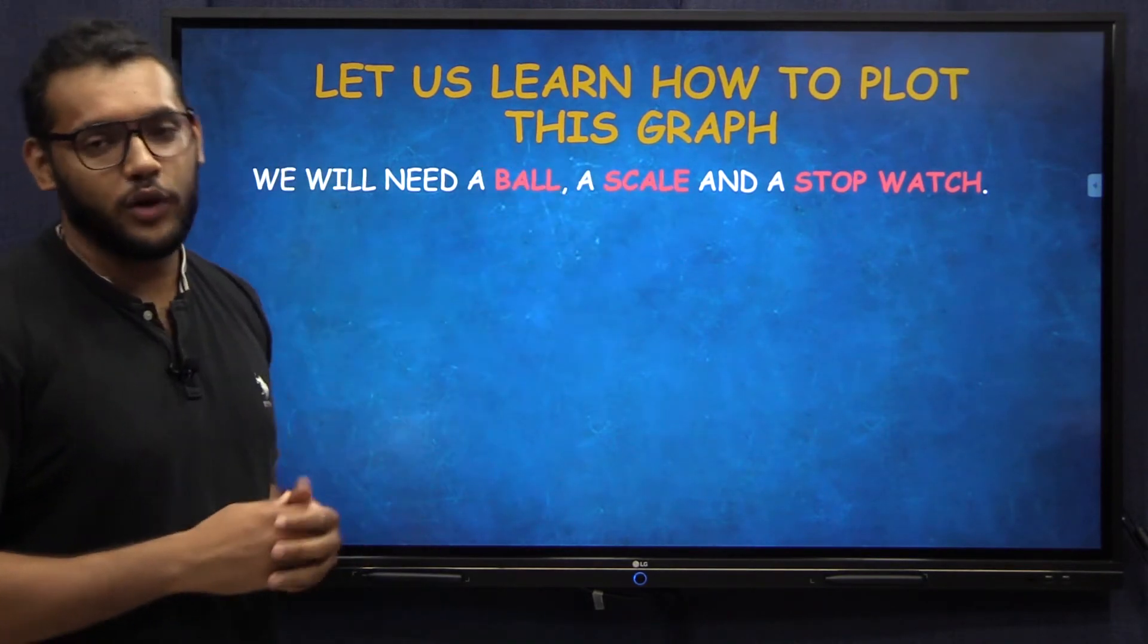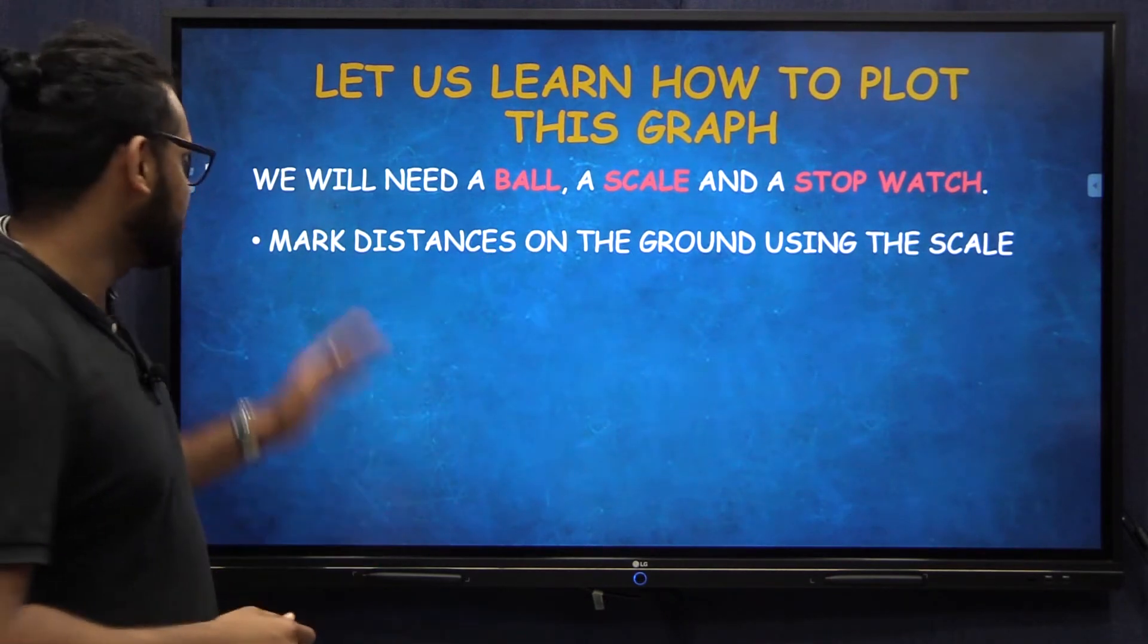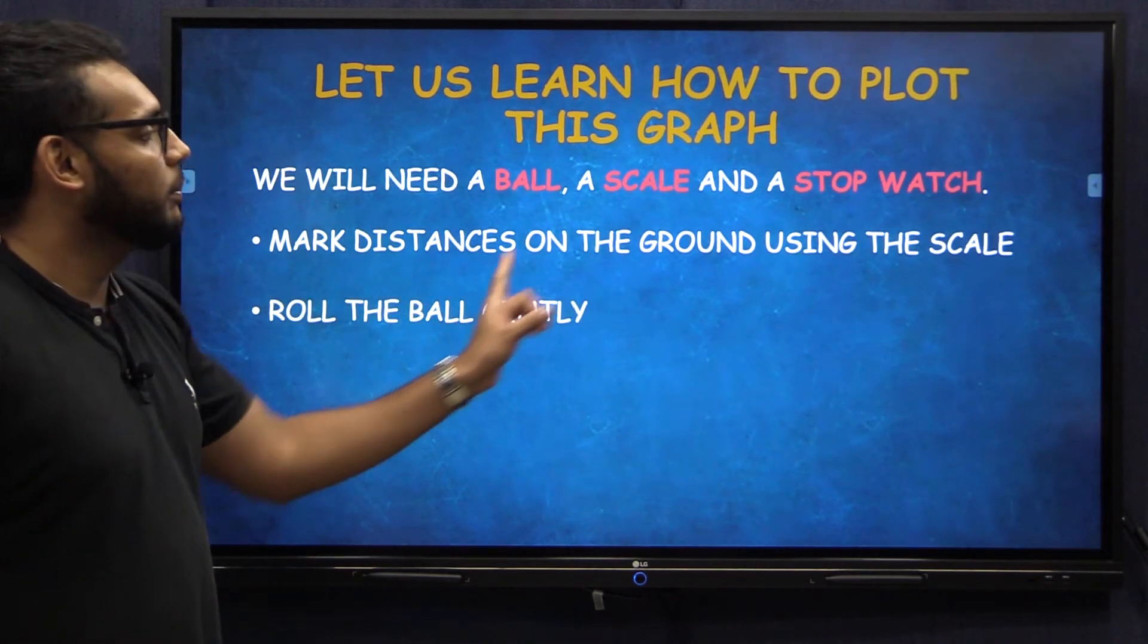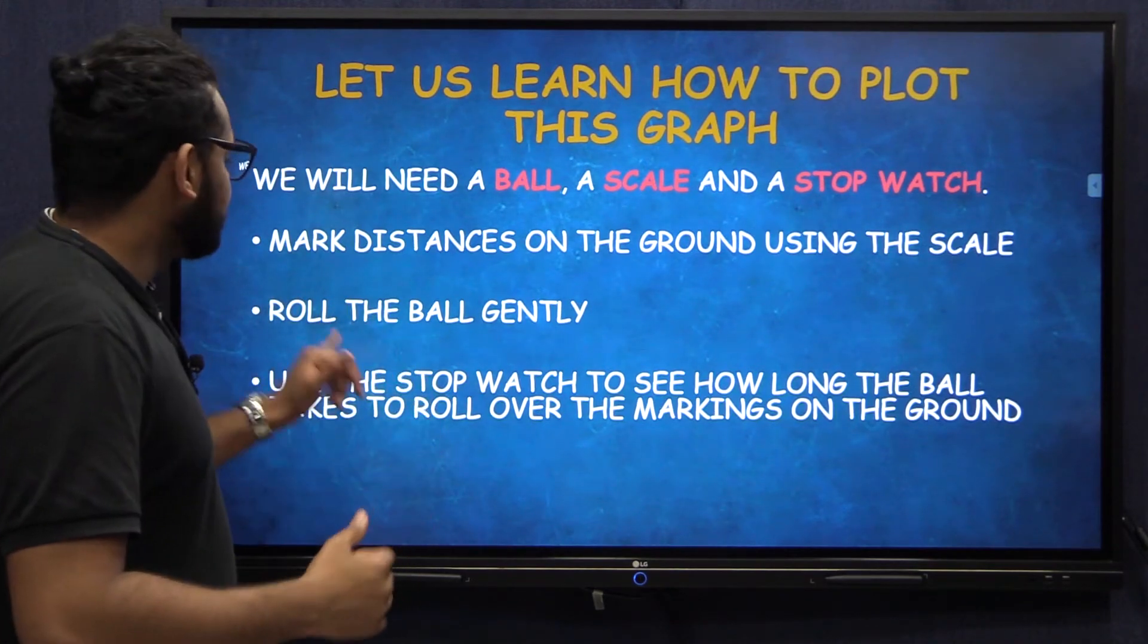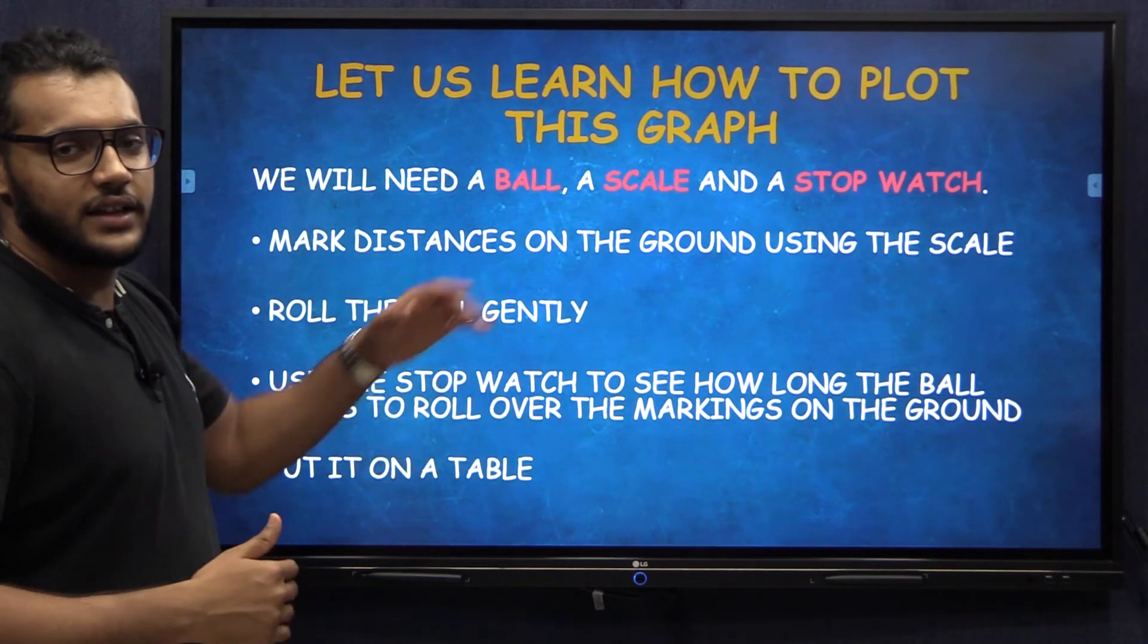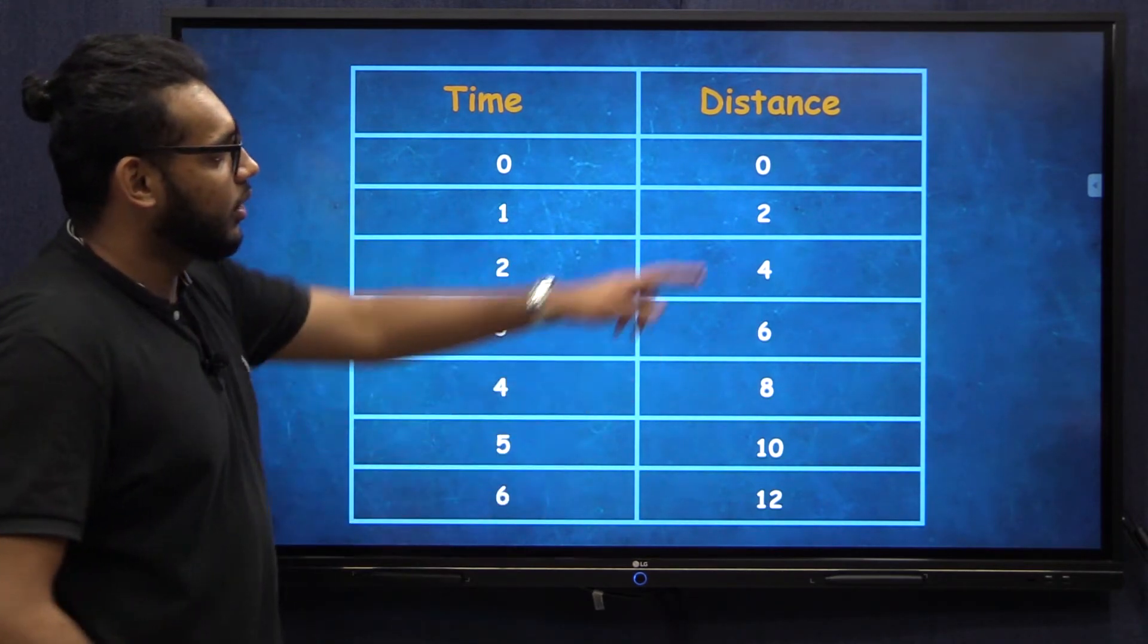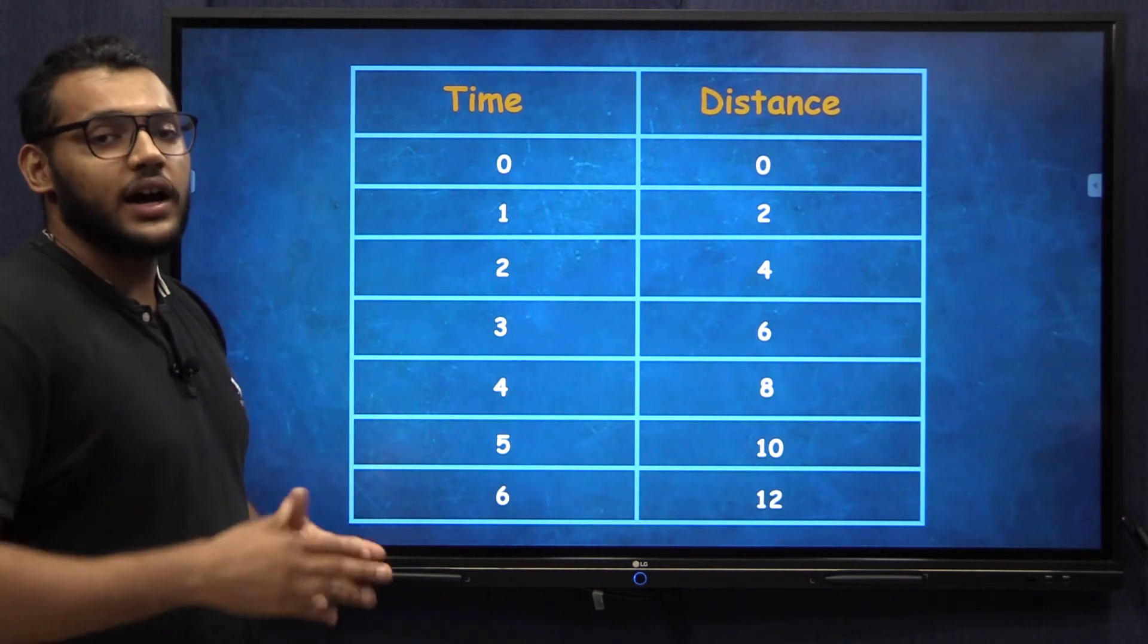Now let us learn how to plot this distance time graph. For that we do a small activity. We need a ball, a scale and a stopwatch. First, I want you to take the scale and make markings on the ground. That is 2 meters, 4 meters, 6 meters, 8 meters, 10 meters and 12 meters. Now that you've got this marking on the ground, I want you to roll the ball very gently and watch it roll past these markings. Now as the ball rolls past the markings, I want you to take the stopwatch and see how long the ball takes to go between each of the markings. Then I want you to record these on a table. You can do this multiple times to get the numbers correctly. For time is 0 seconds, how far has the ball gone? It hasn't gone anywhere. For one second, the ball in this case has gone 2 meters and so on till 6 seconds and it's crossed the 12 meter mark.